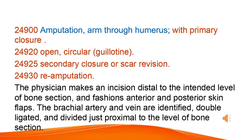Amputation of the arm through the humerus with primary closure. Subtypes include open circular guillotine, secondary closure or scar revision, and re-amputation.